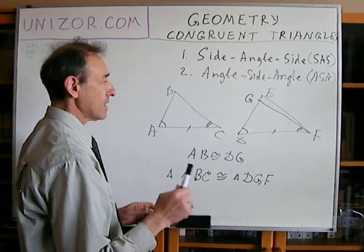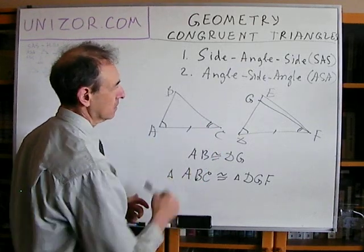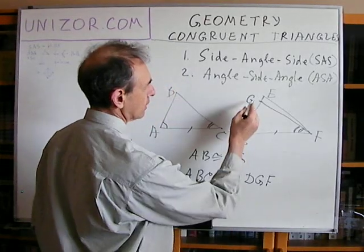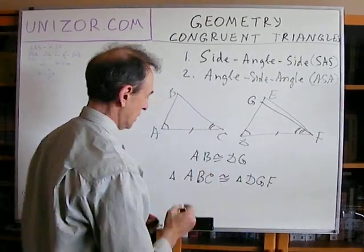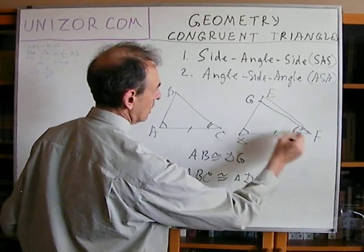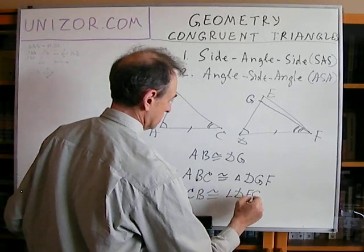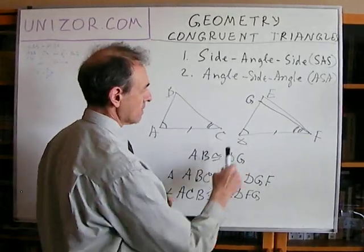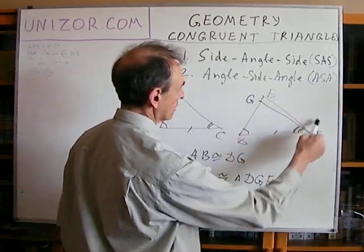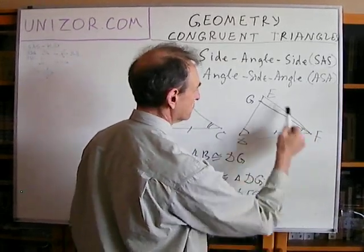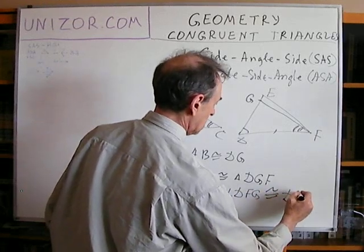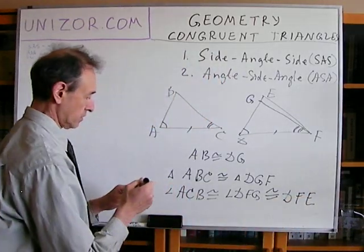If that's true, then this particular angle in triangle ABC should be congruent to angle DFG. So angle ACB is congruent to angle DFG. Now we have an interesting situation: angle DFG is congruent to angle ACB. But in the original triangle DEF, angle DFE is also by condition congruent to angle ACB.